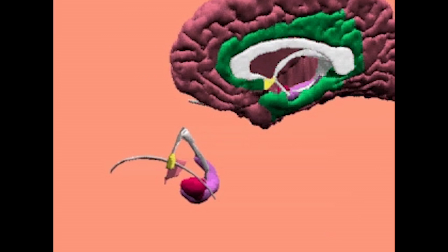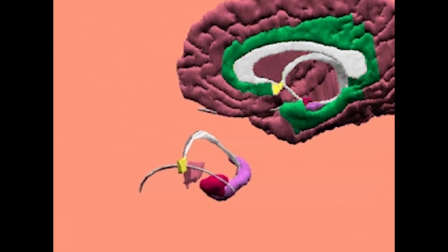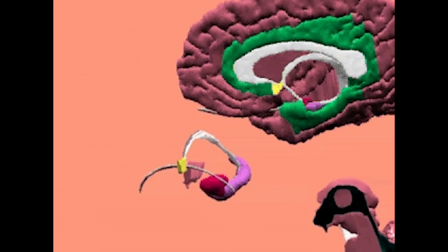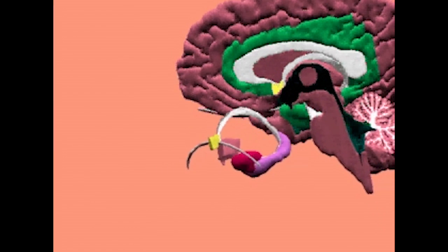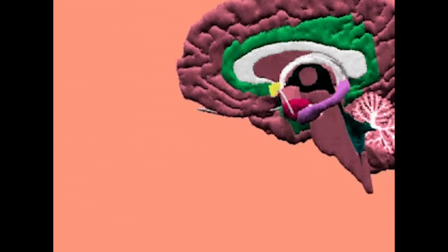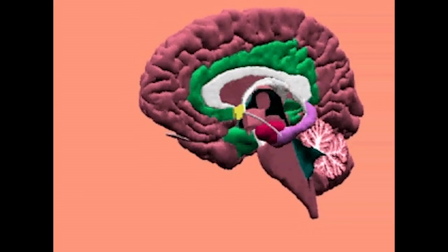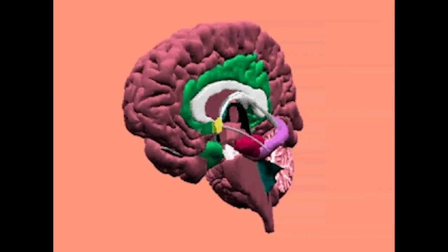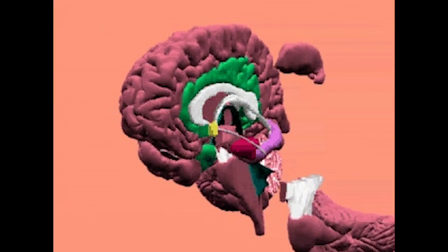Let's put this back together for a moment. We can add the brain stem, put the hippocampus back in, and add the thalamus and brain stem. And now you can see the structures that we're going to be talking about today.